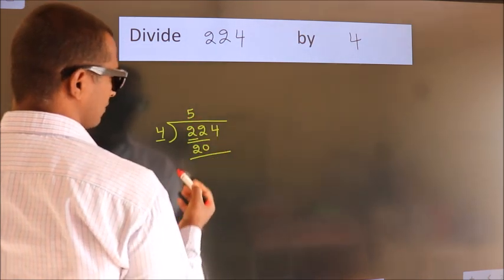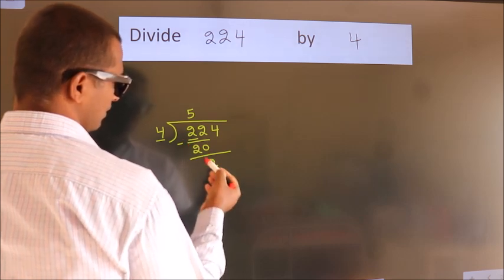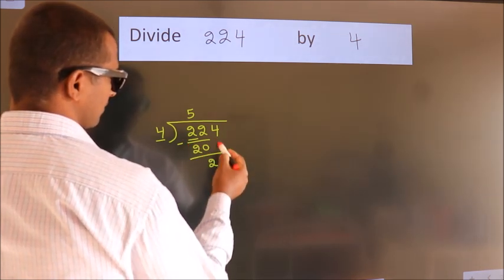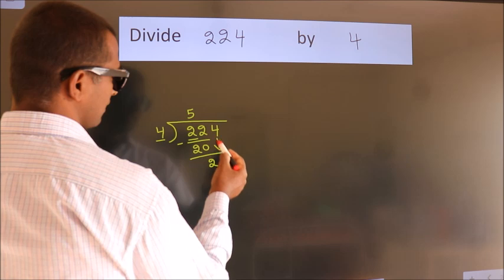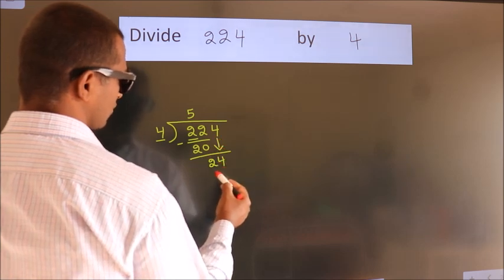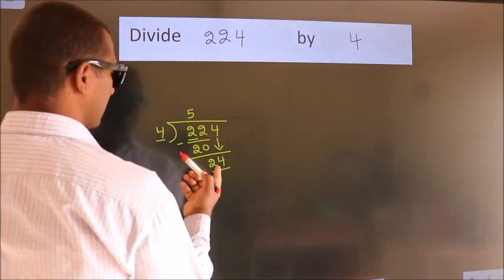Now we should subtract. We get 2. After this, bring down the beside number, so 4 down. So, 24. When do we get 24? In the 4 table.